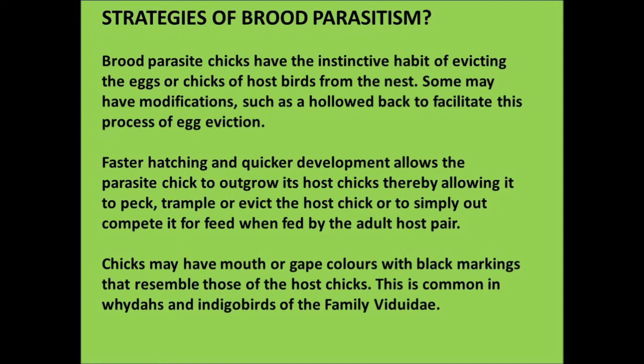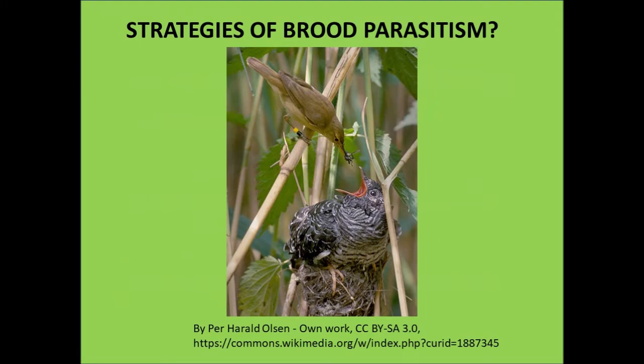Brood parasite chicks have the instinctive habit of evicting the eggs or chicks of the host from the nest. Some may have modifications such as a hollowed back to facilitate this egg eviction. Faster hatching and quicker development allows the parasite chick to outgrow its host chicks, thereby allowing it to peck, trample, or evict the host chick, or to simply outcompete it for food. Chicks may also have gape colors with black markings that resemble those of the host chicks — common in whydahs and indigobirds. Here is an example of a Eurasian reed warbler feeding a grotesquely large common cuckoo chick.